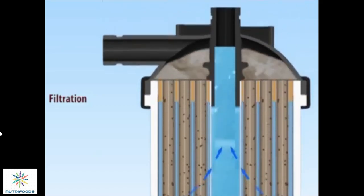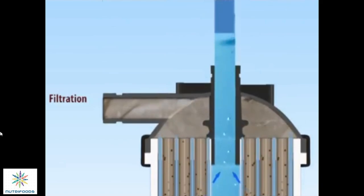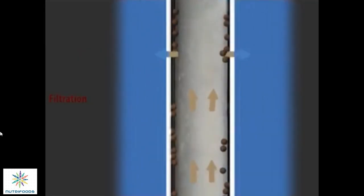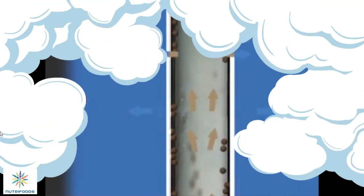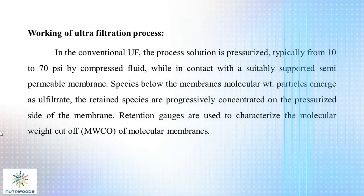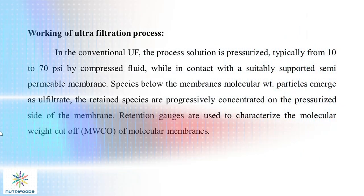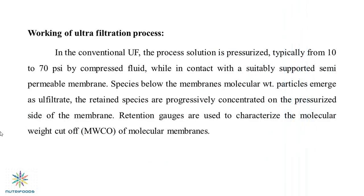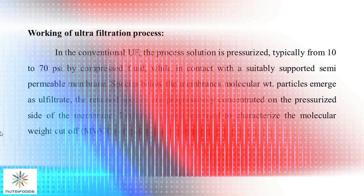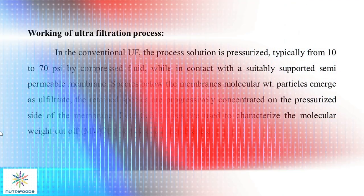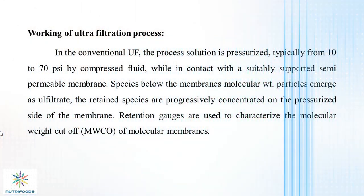Ultrafiltration is a water treatment method that uses a membrane to filter out contaminants from the water. It works by separating impurities from the fresh water entering the plant, then returning them to their original state in the wastewater stream. The ultrafiltration membrane is made of high-density polyethylene or other synthetic materials that allow small particles and dissolved solids through, but not larger molecules like bacteria or viruses.